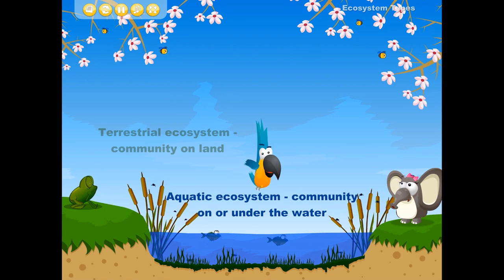The two primary types of ecosystems are terrestrial ecosystems and aquatic ecosystems. A terrestrial ecosystem is a community on land, while the aquatic one is a community on or under the water. There are also mixed ecosystems, such as swamps.